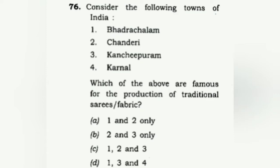Consider the following towns of India: Bhadrachalam, Chanderi, Kanchipuram, and Karnal. We have to select which are famous for the production of traditional saris or fabric. Whenever there is a question about towns famous for textiles, have your answer ready. Chanderi is known for it and Kanchipuram is known for it — most people will be familiar with these two. The correct answer is B: two and three only.